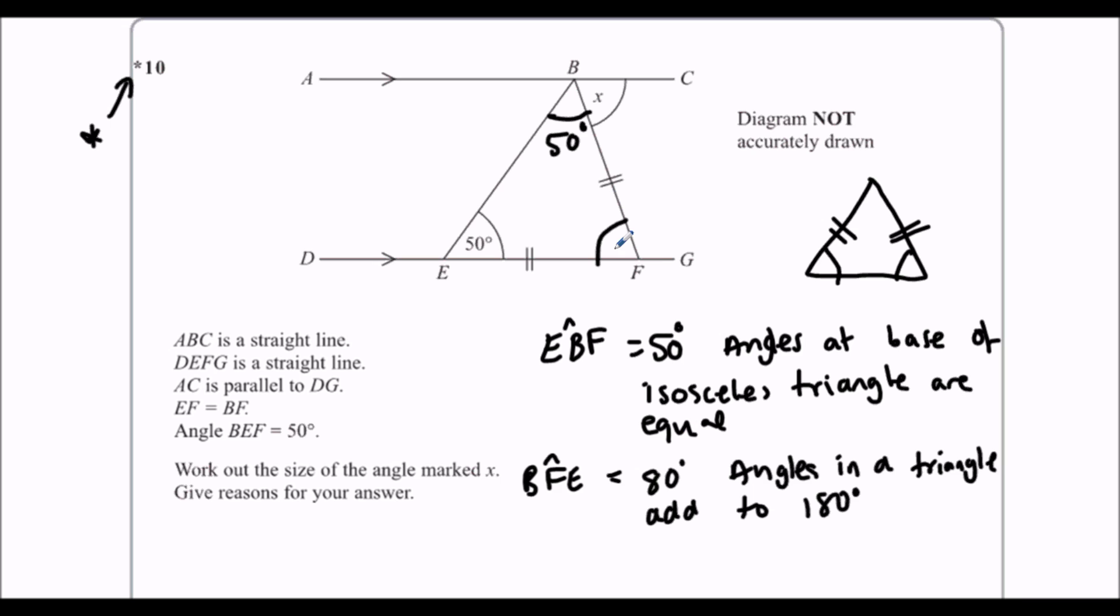So this is 80 degrees. And then we look at our parallel lines. And we've got alternate angles. So there's a Z shape. This Z shape here means the angles are alternate. So x is also 80 degrees. Because alternate angles are equal.